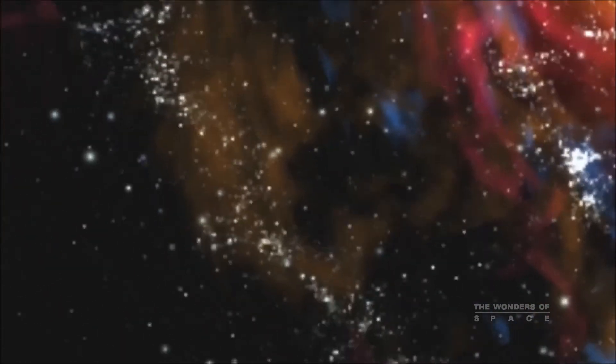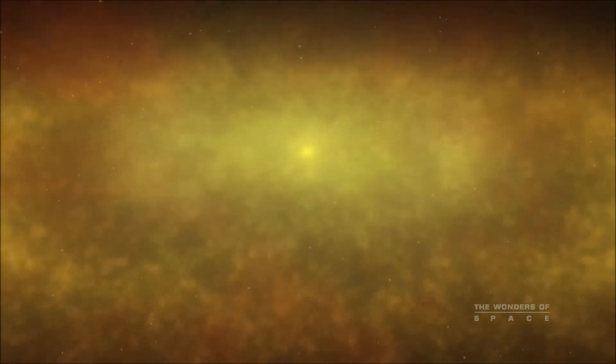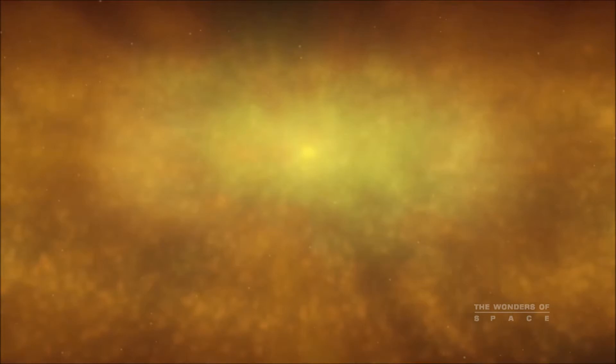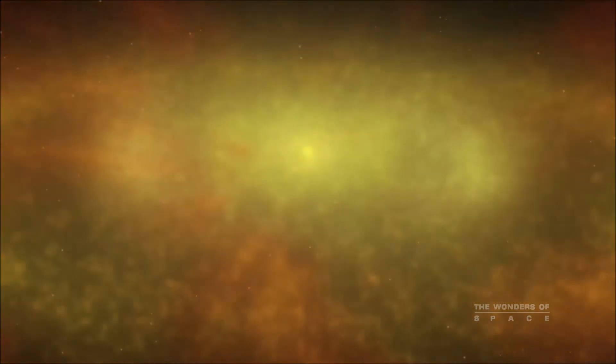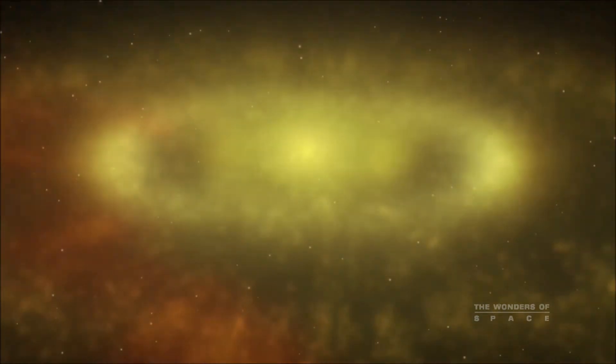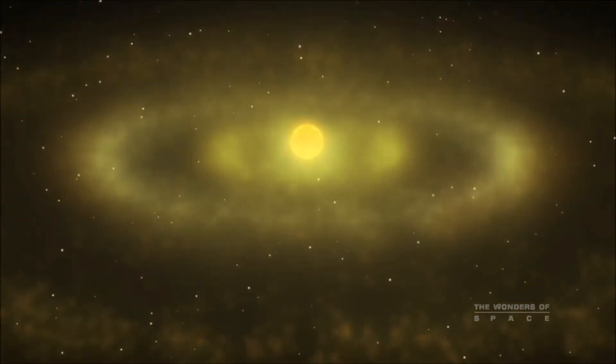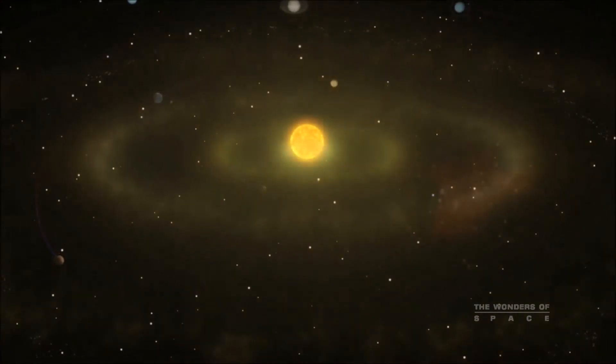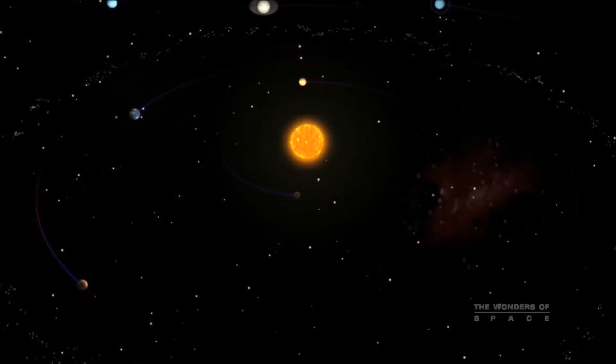4.6 billion years ago, our Sun started to form about two-thirds of the way out on one of the spiral arms of the Milky Way. Our Sun is a third-generation star, starting from gaseous clouds and dense nebulae containing many heavy elements. It condensed under the inexorable pressure of gravity until it was hot and dense enough to experience nuclear fusion at its core.